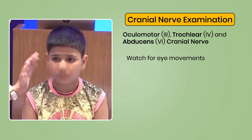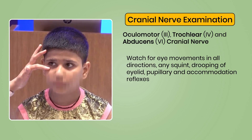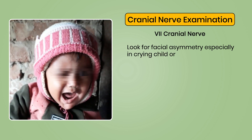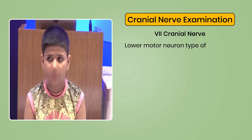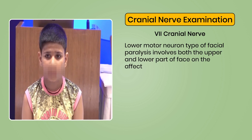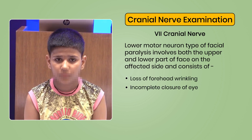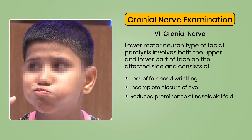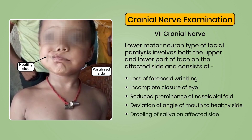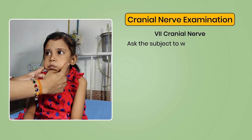Watch for eye movements in all directions, any squint, drooping of eyelid, and pupillary and accommodation reflexes. Seventh cranial nerve: look for facial asymmetry, especially in a crying or smiling child. Lower motor neuron type facial paralysis involves both the upper and lower face on the affected side, including loss of forehead wrinkling, incomplete closure of the eye, reduced prominence of nasolabial fold, deviation of angle of mouth to healthy side, drooling of saliva on affected side, and inability to blow air or whistle from affected side. Ask the subject to whistle, blow, and close eyes tightly to elicit these signs.